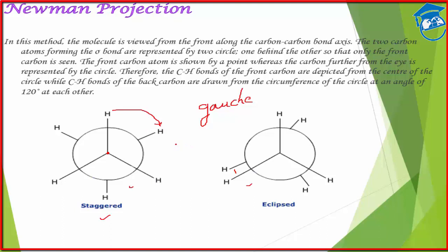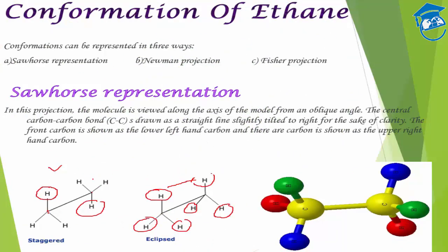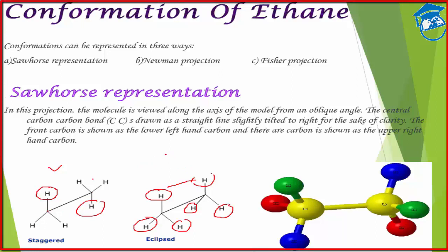We can easily convert the sawhorse projection into a Newman projection. In the sawhorse, the left side becomes the front point in the Newman. We attach all three groups to it, then for the back carbon we draw a circle and attach the groups to it. For example, if it is CH3 on one side and CH3 on the other — opposite to each other — then at the front we put CH3, and at the back we have hydrogen, hydrogen, and CH3. The conversion is quite simple.